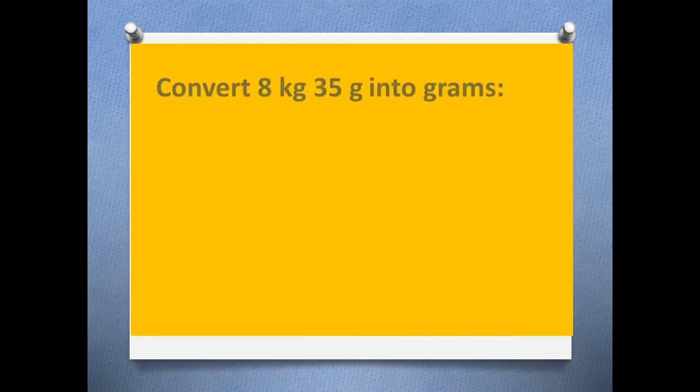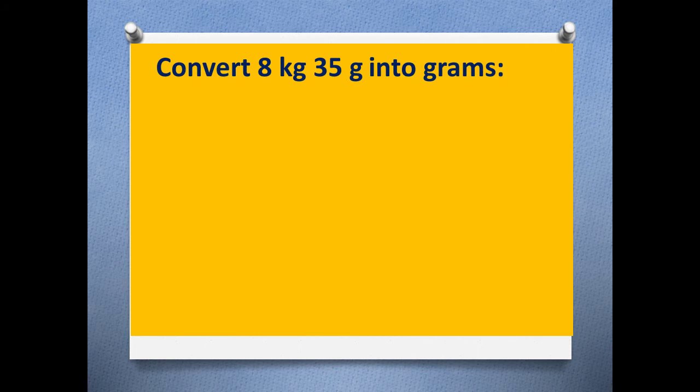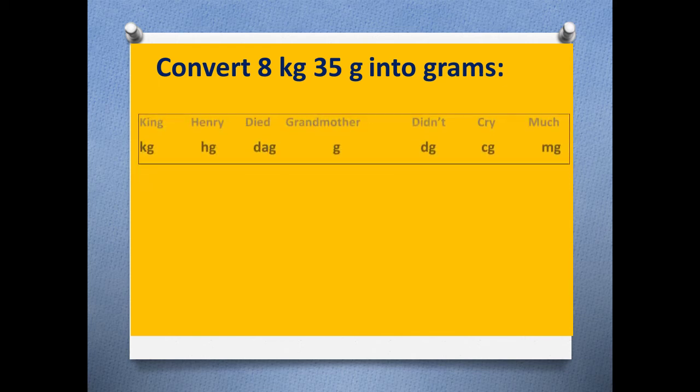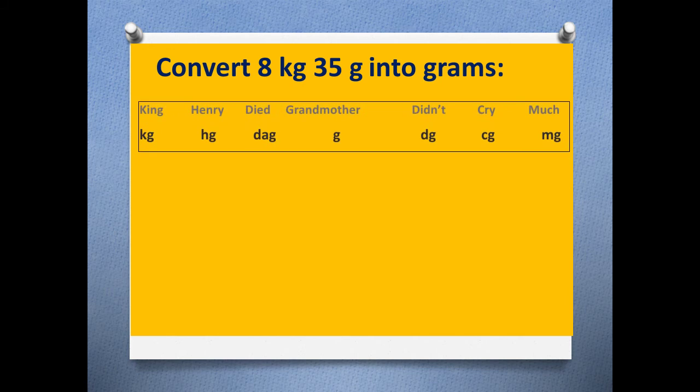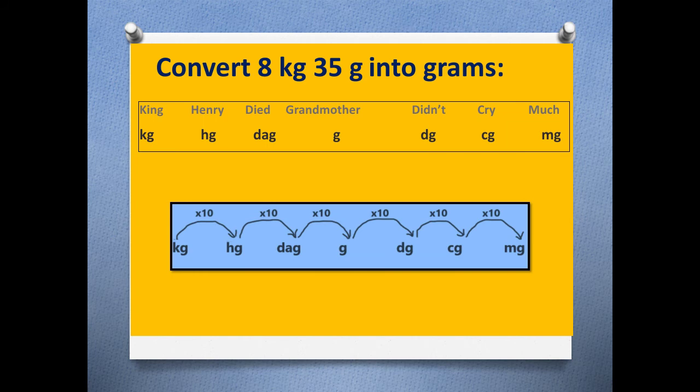Now let us learn how to convert a bigger unit into the smaller unit. So we are going to learn how to convert 8 kilograms 35 grams into grams. So before that we must write King Henry died, grandmother did not cry much. So we will make a chart like this.